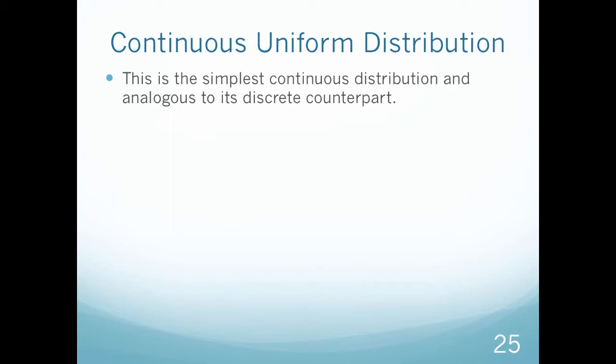If you remember from the previous chapter, the uniform distribution was the easiest kind of distribution to look at or analyze. This is going to be the same case for continuous random variables.